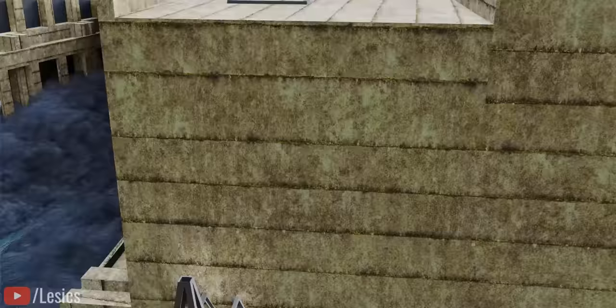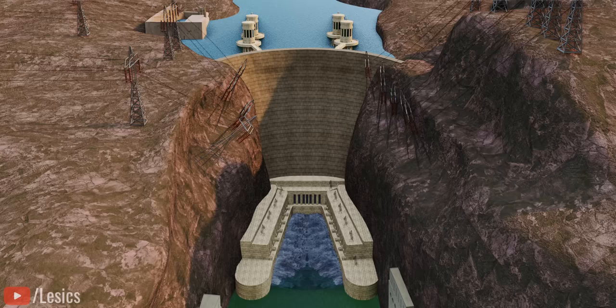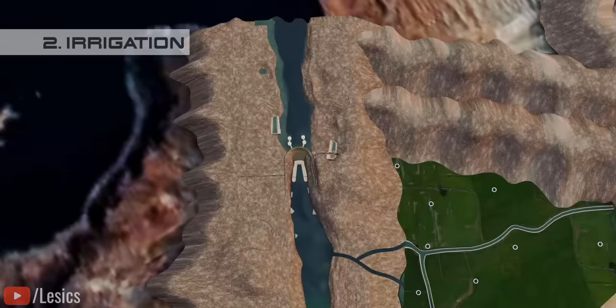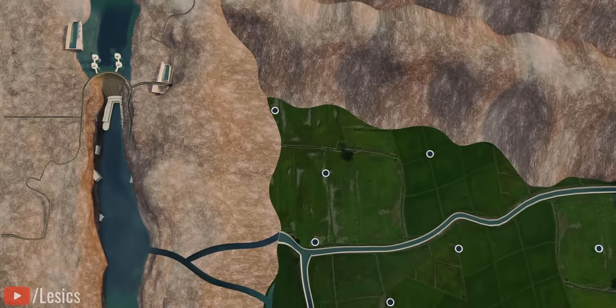Later, this water is released through outlets downstream for irrigation purposes. The Hoover Dam irrigates more than 1 million acres of land. Interestingly, the dam also creates one of the largest man-made lakes in the world, Lake Mead. This huge water storage facility helps groundwater recharge, thus increasing the water level in nearby wells.